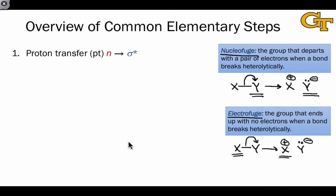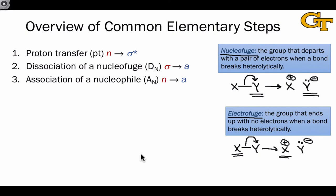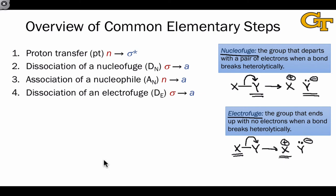The first elementary step, and arguably the simplest, is proton transfer, which always involves an N-to-sigma-star interaction. The second is dissociation of a nucleophuge, which involves cleavage of a sigma bond toward the nucleophuge — a sigma-to-A interaction we'll look at in detail. Association of a nucleophile is the exact reverse of DN and involves an N-to-A interaction, one of the most common and important elementary steps. Dissociation of an electrophuge, or D-sub-E, is another type of sigma-to-A interaction where the focus is on the electrophuge rather than the nucleophuge.